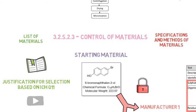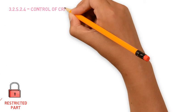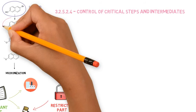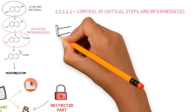Finally, the remaining sections are mainly present in the Restricted Part. The control of critical steps and intermediates, which will describe the specifications and methods of the isolated intermediates of the route, as well as how the critical steps of the process are controlled.